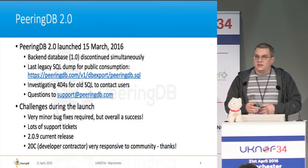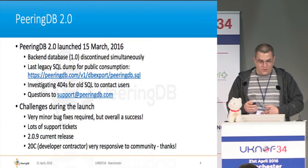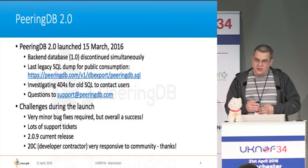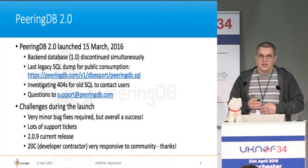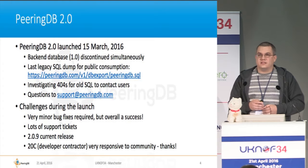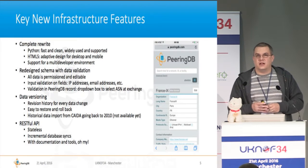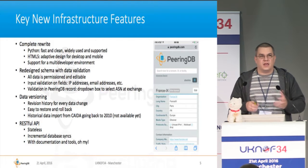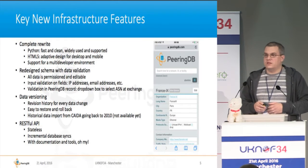PeeringDB 2.0 was launched on March 15th after years of anticipation. The backend database dump was discontinued, so there are no more legacy dumps, and there were very few challenges during the launch. The support team that rewrote the database did a great job. There were a few bug fixes and lots of support tickets, but other than that it was a pretty smooth launch. The new slides are broken down into infrastructure features on the backend and new user features on the frontend.